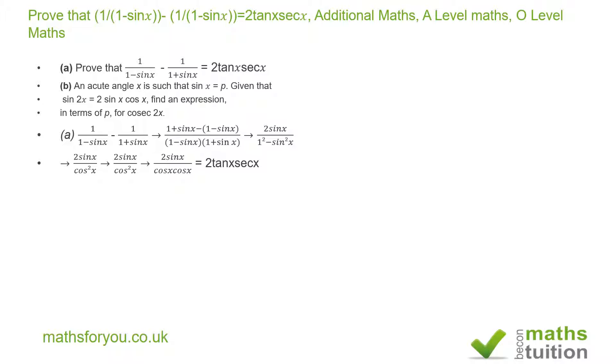With cos squared x, we break it up into cos x and cos x. The 2 remains where it is. The sin x divided by cos x gives us tan x and 1 divided by cos x becomes sec x. And that's what we're supposed to prove, that becomes 2 tan x sec x.